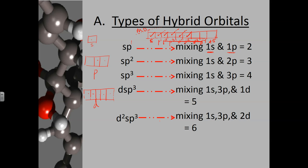The highest hybridization we will encounter is D2sp3, and that corresponds to your octahedral parent structure. Hybridization is when you mix atomic orbitals to make degenerate molecular orbitals — those are the orbitals where valence electrons exist around the central atom as electrons are being shared.